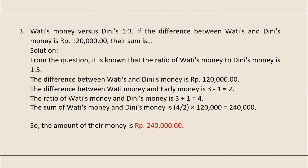Problem 3. The ratio of Wati's and Dini's money is 1 to 3. If the difference between Wati's and Dini's money is 120,000 rupiah, their sum is? From the equation, it's known that the ratio of Wati's money to Dini's money is 1:3. The difference between their money is 2 parts, and the ratio of Wati's and Dini's money is 4 parts total. So the sum of Wati's and Dini's money is 240,000 rupiah.